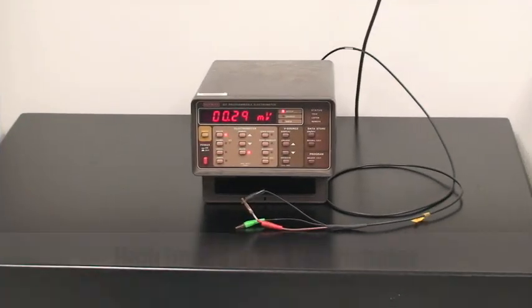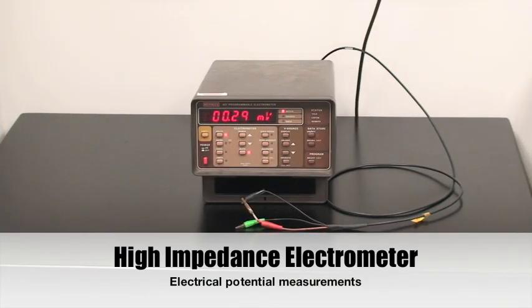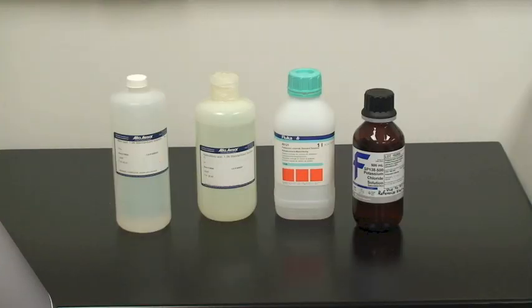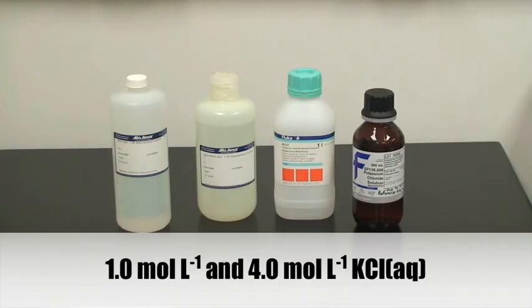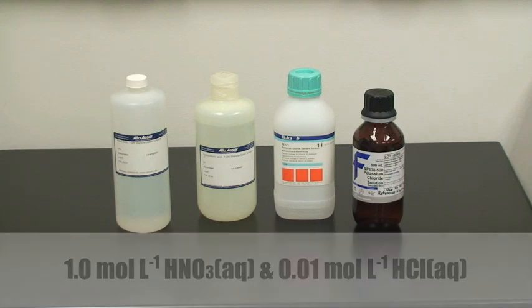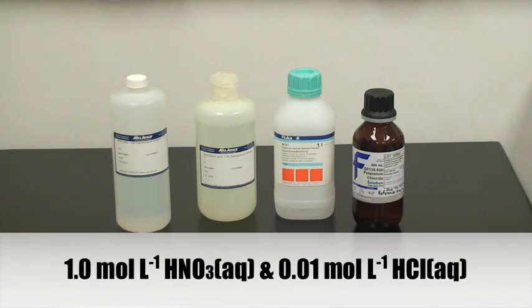Equipment and Materials: We will need a High Impedance Electrometer for Electric Potential Measurements, 1 M aqueous HCl, 4 M aqueous HCl, 1 M Nitric Acid, and 0.01 M HCl.